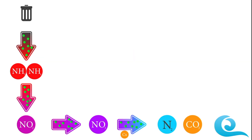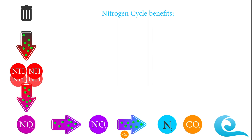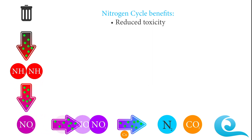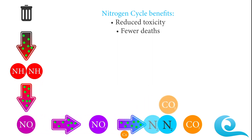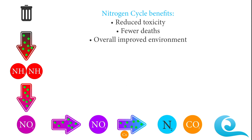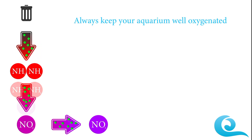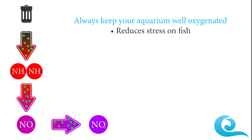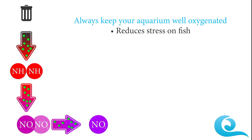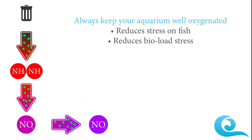In summary, the nitrogenous waste is converted to nitrogen gas through this cycle, which reduces toxicity and allows the system to become much healthier, causing fewer deaths and an overall improved environment. This part of the nitrogen cycle absorbs a lot of dissolved oxygen, which is why we always recommend having a well-oxygenated aquarium. A well-oxygenated aquarium reduces stress on fish and other aerobic organisms, which can save your livestock and reduce bioload stress.